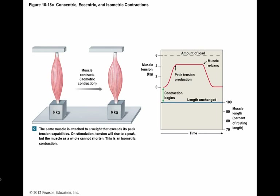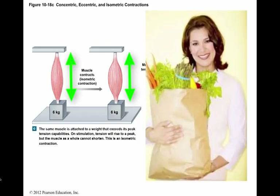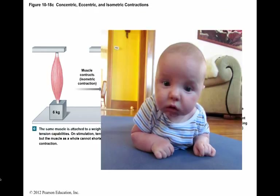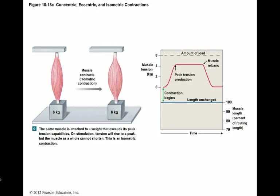In an isometric contraction, the muscle as a whole does not change length and the tension produced never exceeds the load. Examples of isometric contractions include carrying a bag of groceries and holding our heads up. When you perform an isometric contraction, the contracting muscle bulges, but not as much as it does during an isotonic contraction.